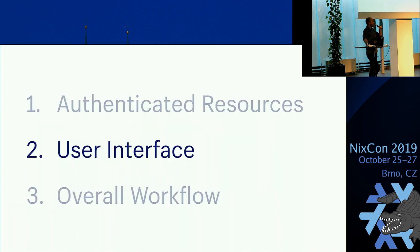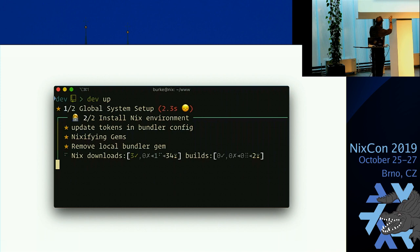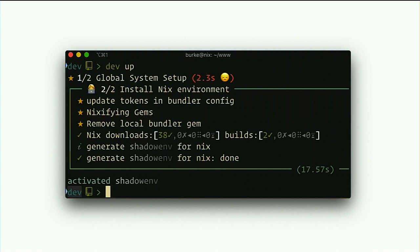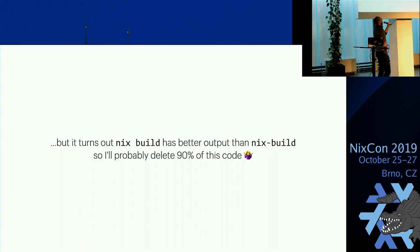User interface is another thing. This is running dev up using Nix and it's quite pretty — it's got a spinner, it's spinning, and it's downloading stuff. Right now it's downloading Ruby on a not-super-fast connection. For that, I ran Nix dash build with -VVVQ which generates a lot of output, and I wrote a really fun state machine for that. I discovered today that 'nix build' has much better output than 'nix-build', so that's going to look different next week.